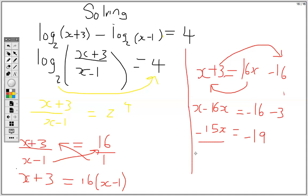Then divide both sides by negative 15. So x equals 19 over 15. And that's it.